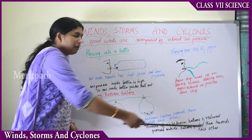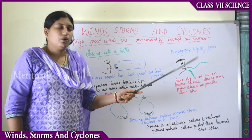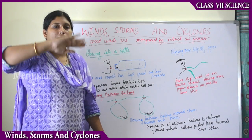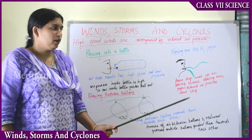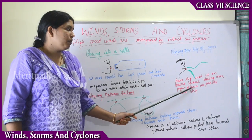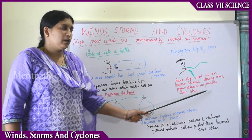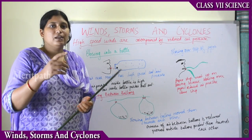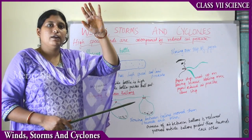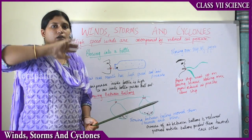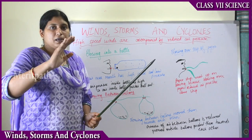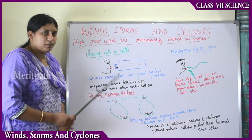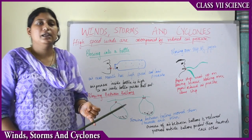Take a paper strip, hold it, and blow over it — the paper strip will rise upward. The paper strip went up on blowing because blowing over it reduces the air pressure above the strip. The high speed of air above created low pressure, and the higher pressure from below pushed the strip up. These three experiments demonstrate that high-speed winds are always accompanied by low air pressure.